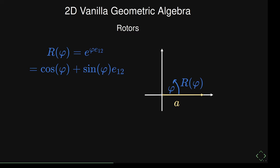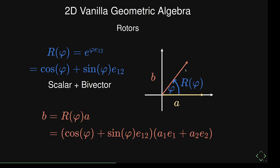Here's an example: if we have a vector A and want to rotate it by angle φ, we construct a rotor — exactly like with complex numbers — which is e^(φ·E12) = cosine(φ) + sine(φ)·E12. Multiplying the vector by this rotor gives the rotated vector. Notice the rotor has a scalar part and a bivector part — we're adding different grades, different kinds of objects — and this turns out to be very useful.